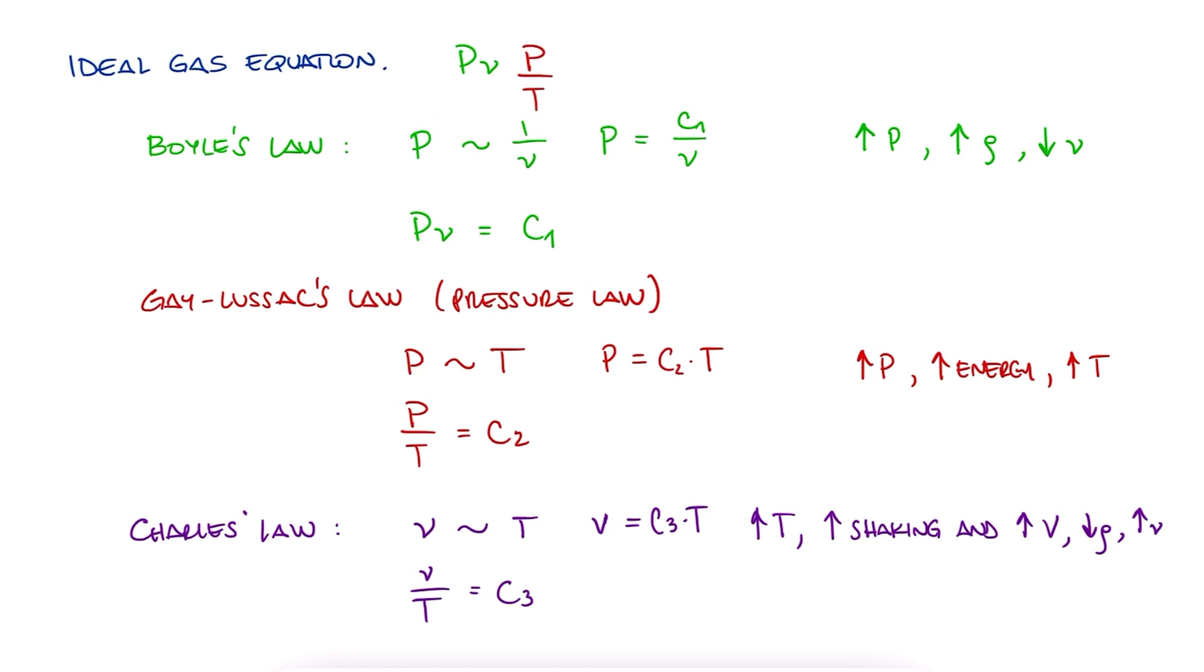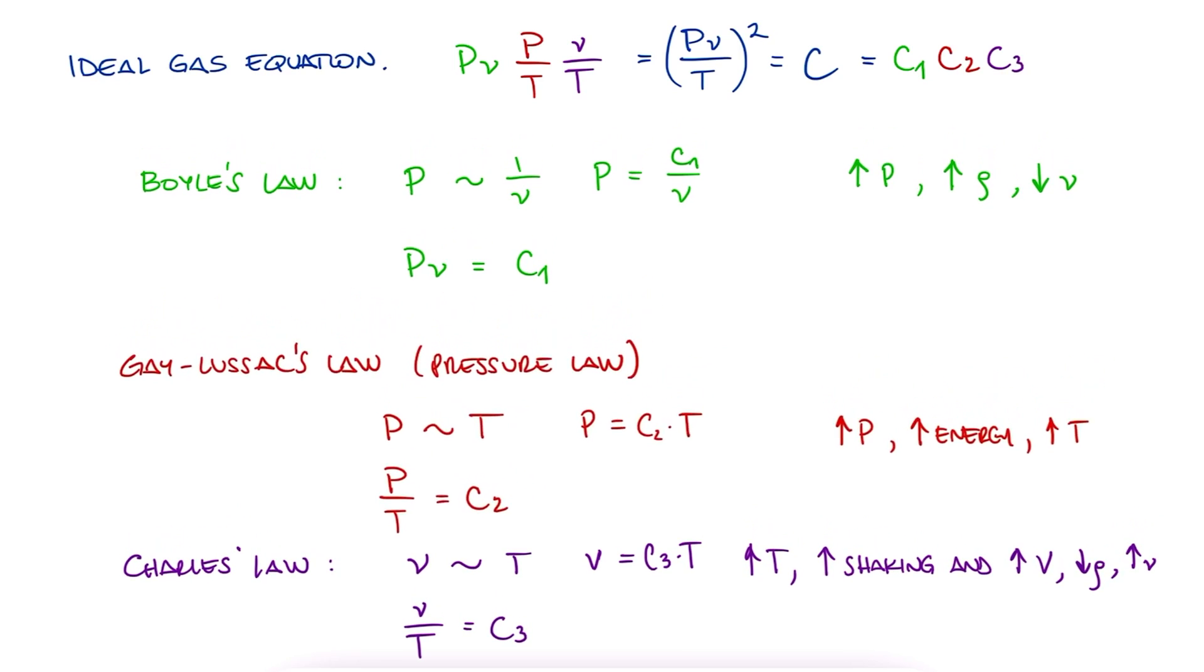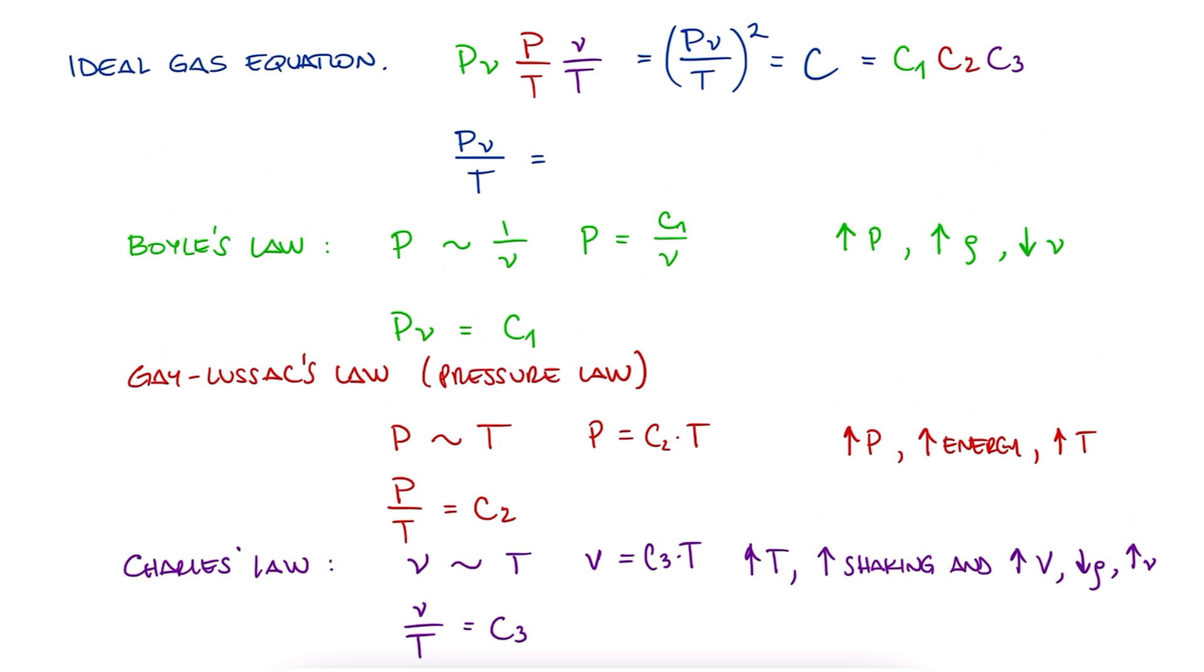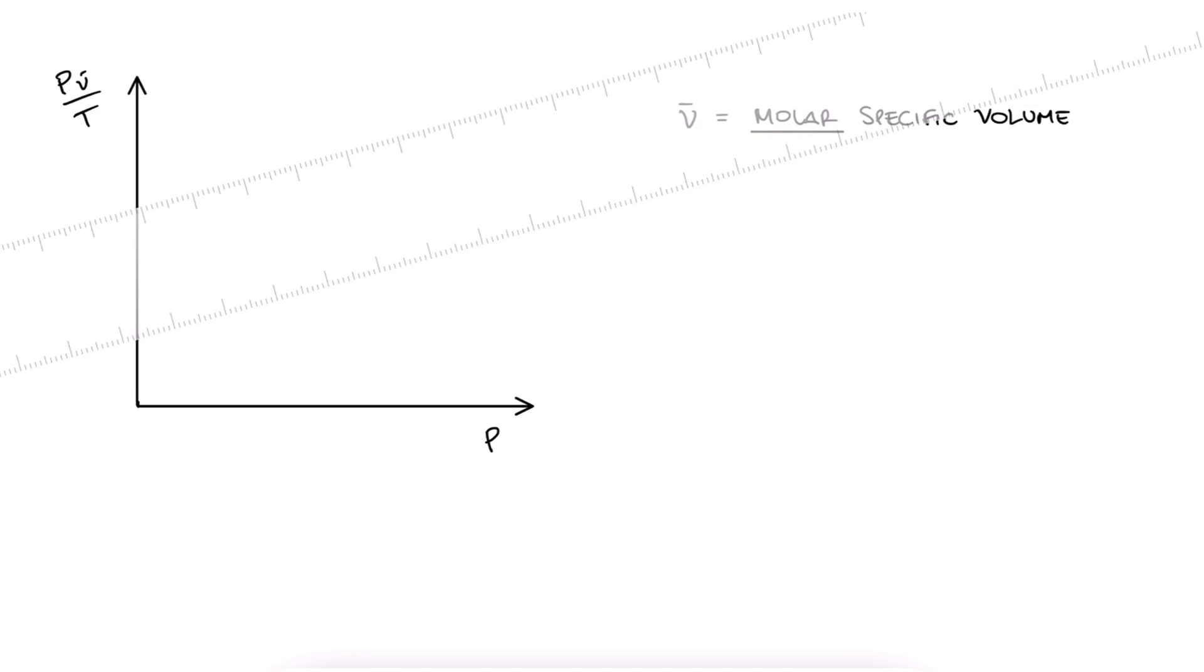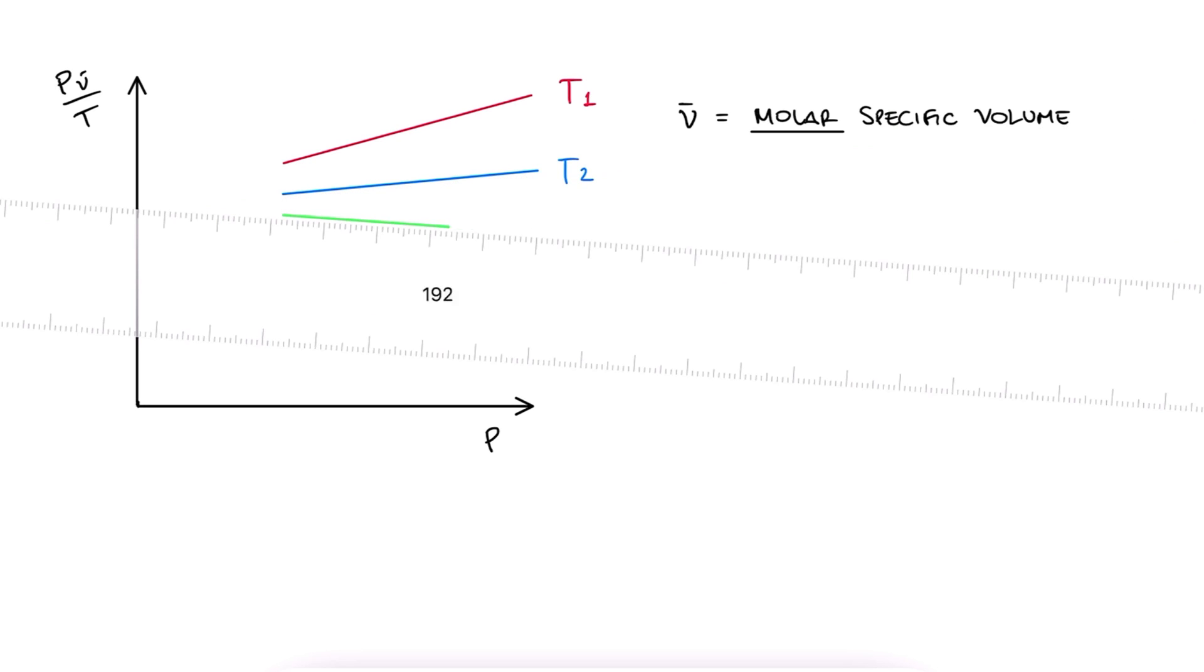If we multiply all three, we get PV over T squared, and on the right-hand side, a new constant. If we take the square root of both sides, PV over T is a constant. When physicists started plotting, for example, PV bar over T against P, V bar being the molar specific volume, they noticed that for constant temperatures, the plots would look like straight lines.